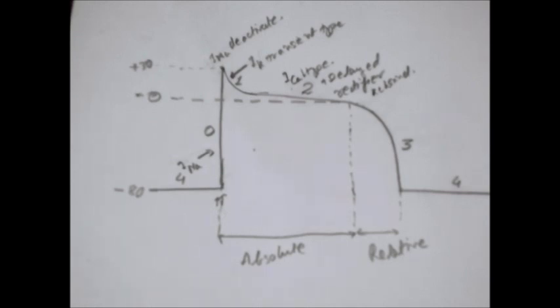In the relative refractory period, VPCs, or ventricular premature contractions or atrial premature contractions, occur.